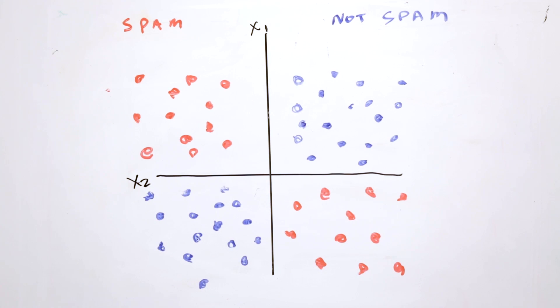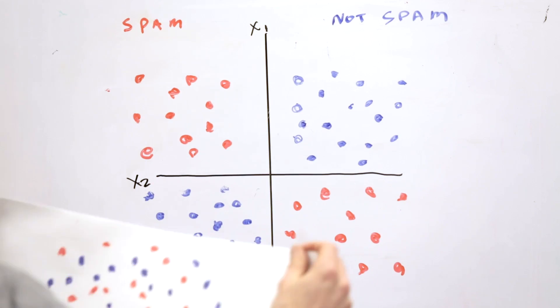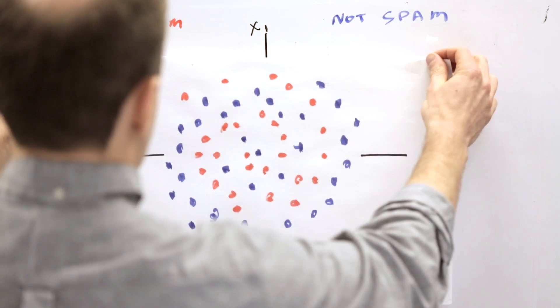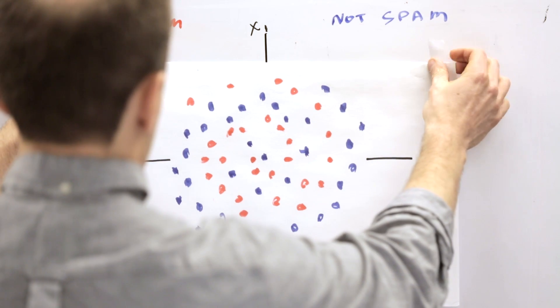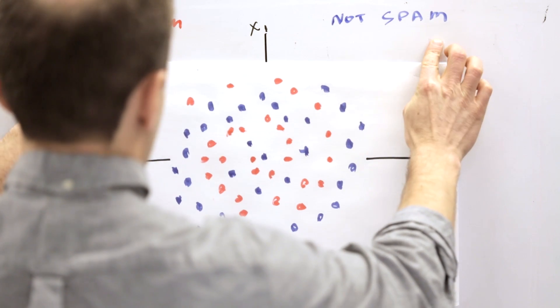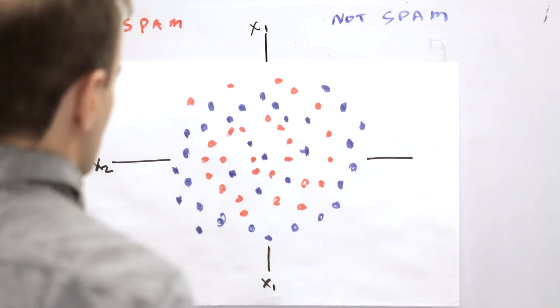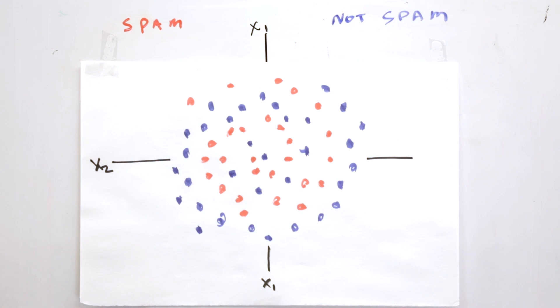But what happens if we get a slightly more complicated problem, maybe something that looks like this? At some level, we've got maybe a set of spirals interacting with each other.